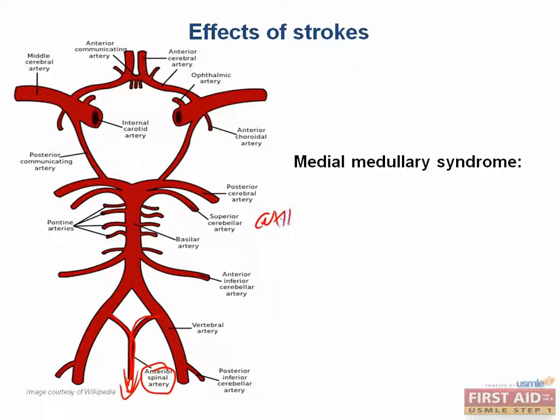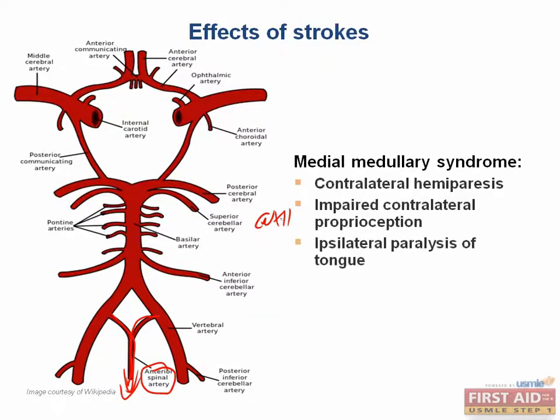So what are the symptoms you would expect with this type of lesion? You would get a contralateral hemiparesis, impaired contralateral proprioception, and an ipsilateral paralysis of the tongue. Keep in mind that the tongue deviates to the side of the lesion. This can be extremely helpful when you're trying to localize the lesion to a particular hemisphere on a question.